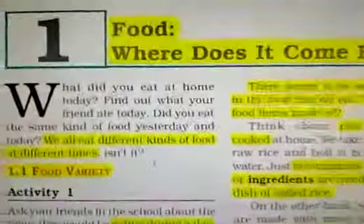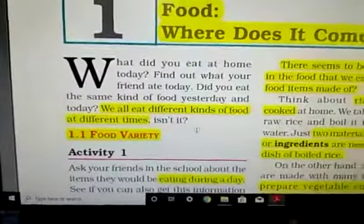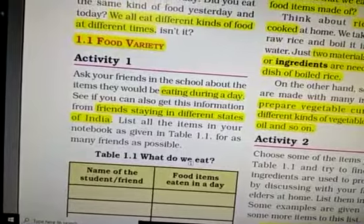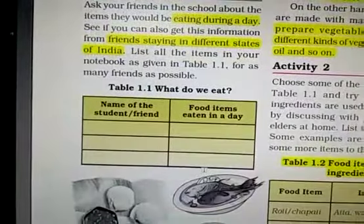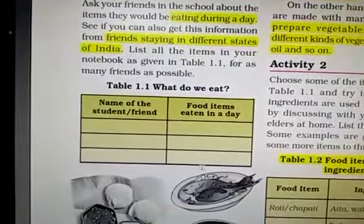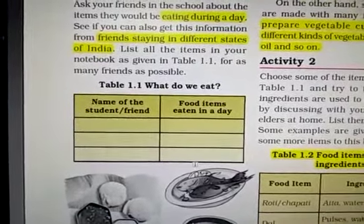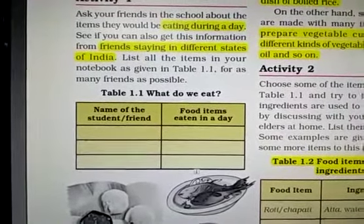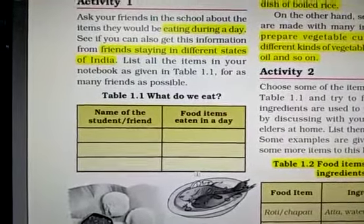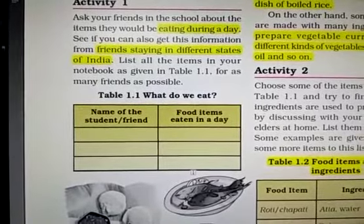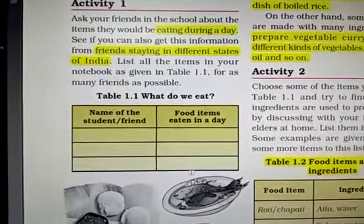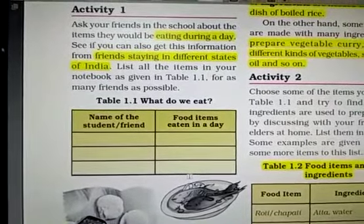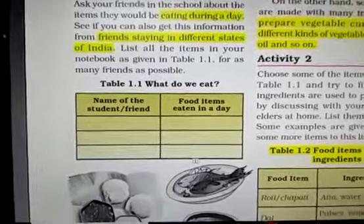So in this way we take different types of food at different times. Now, Food Variety Activity 1: eating during a day we have different types of food in the morning, etc. You discuss with your friends also — they are from different states and have different foods. For example, South Indians take dosa, idli, sambar, rasam, etc. in the lunch, and North Indians take roti, chawal, dal, etc.